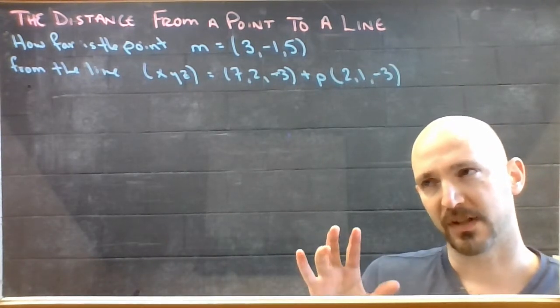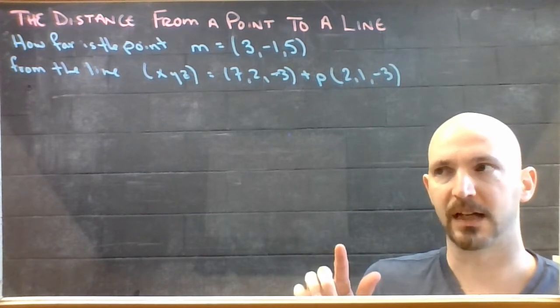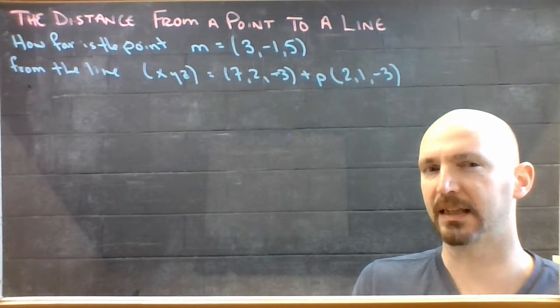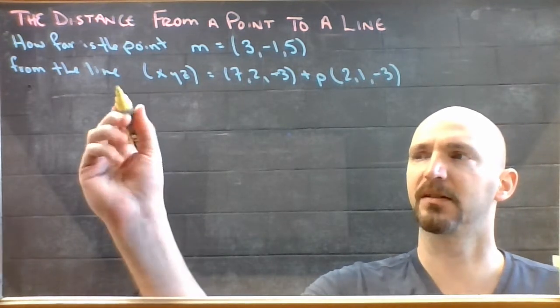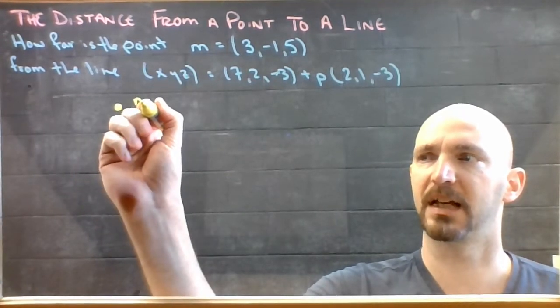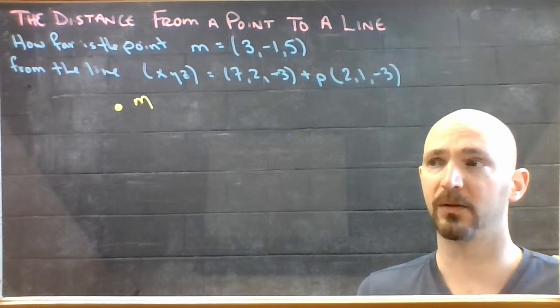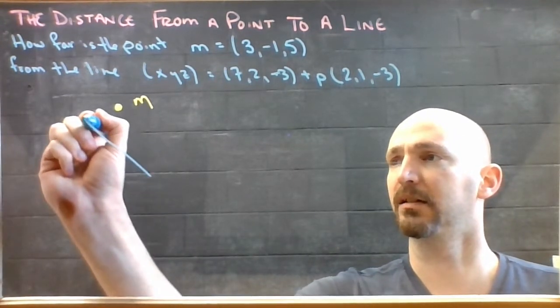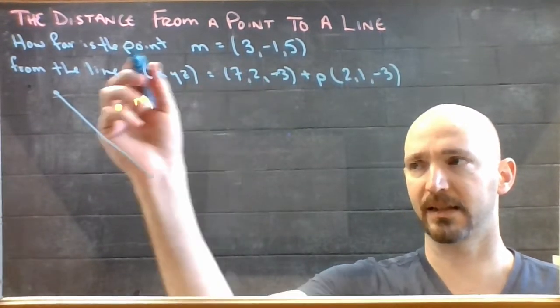I want to work through the construction of this before we actually do any calculations so you can get the idea of what we're after. First off, there's some point and I've named it M. And then I have a line going through space like so, and that's this line here.